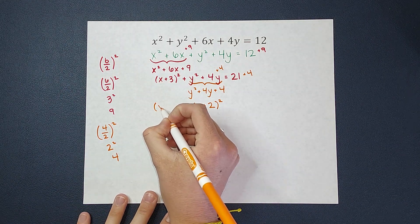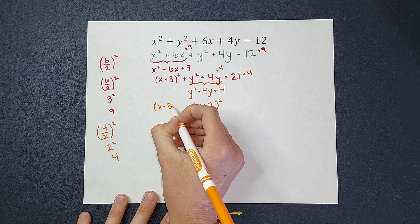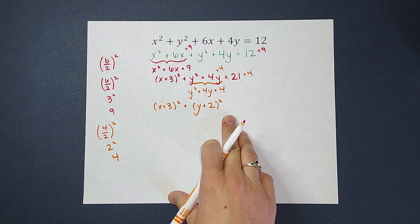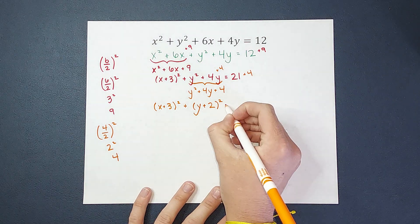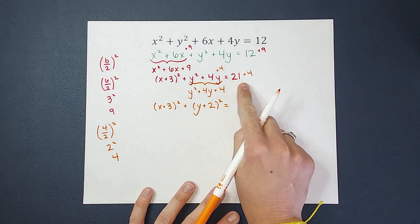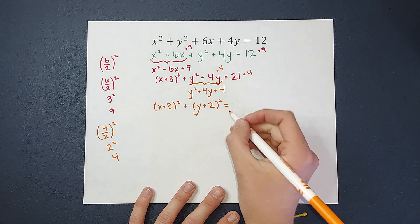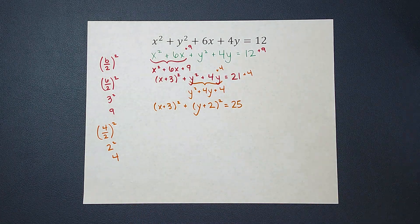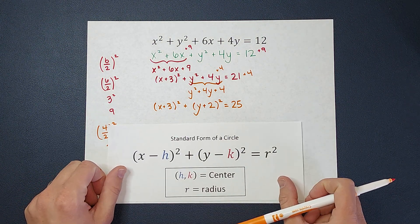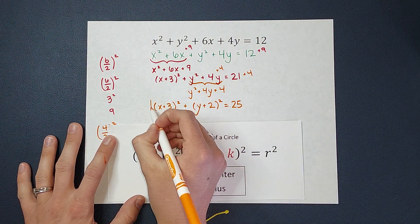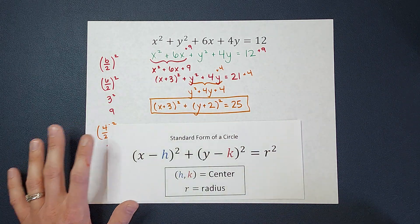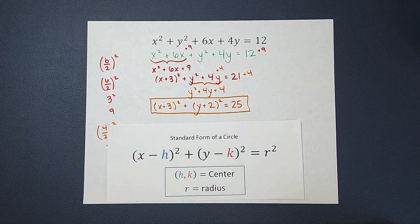Pull them down. So I've got the x plus 3 squared plus y plus 2 squared, and what does this equal? 21 plus 4, which gives me 25. Okay guys, are we looking like standard form? We are. Oh my gosh, we did it. We got there. So here is my standard form.